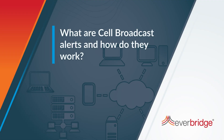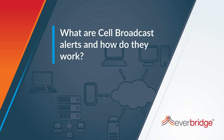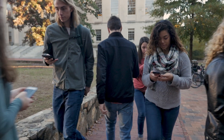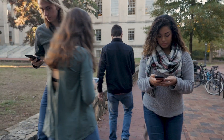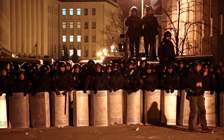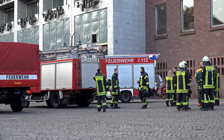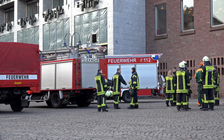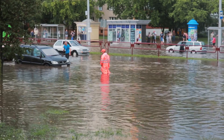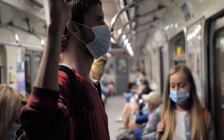What are cell broadcast alerts and how do they work? Public warning systems are used to warn and inform the population before, during and after a major incident, including severe weather, natural and man-made disasters, or a pandemic.